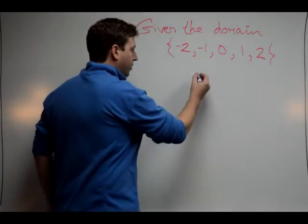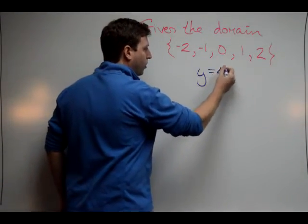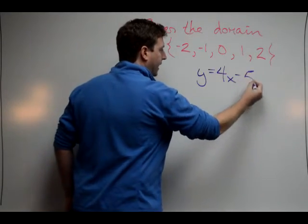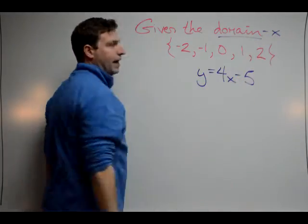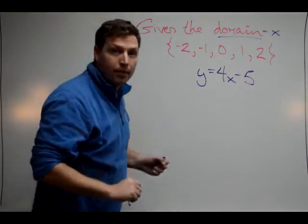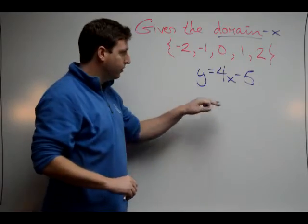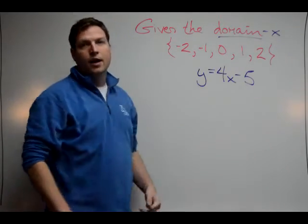So our first example is going to be y equals 4x minus 5. And so we know that the domain is also the x value, or the input. So we want to know what is the output when we plug in these values into our function here.